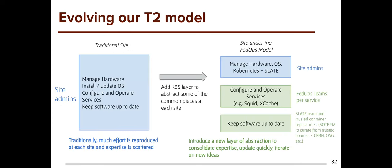Under this new model, site admins just run the hardware, operating system, and Kubernetes — that becomes the limit of what they need to manage. Fed ops teams then run different services on behalf of the collaboration. Things like Slate and Soteria handle the middle layer of Helm charts and containers. Increasingly, applications are going 'Kube-native' in the high energy physics community, with significant interest in Jupyter-driven 'Pythonic analysis platforms' with easy-to-use libraries for data access and processing — fundamentally developed with Kubernetes in mind.